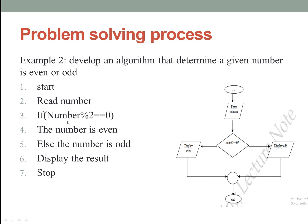The flowchart is the diagrammatical representation of the even/odd algorithm. Start, then enter the number as input, then a decision: is number modulus 2 equal to 0? If yes, the number is even. If no, the number is odd. Then display the number — either even or odd — and finally terminate those two steps and stop.